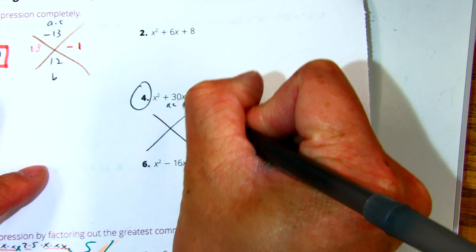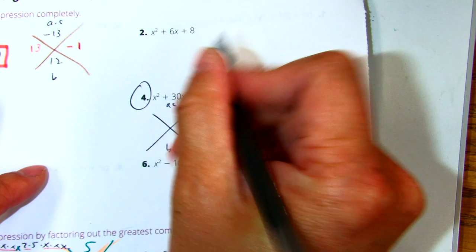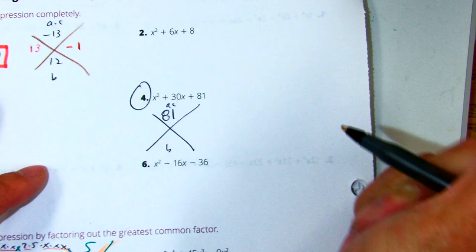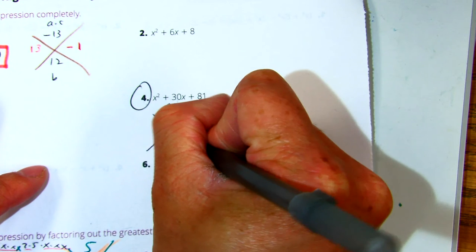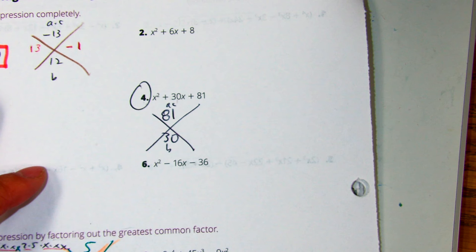A times C. What is it? B value. Two numbers. 3 and what? 27.